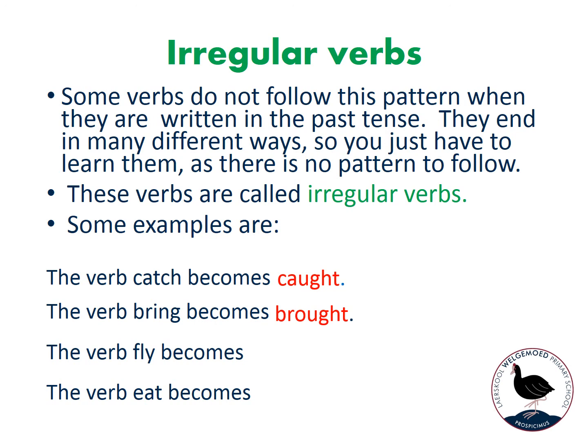The verb 'fly' — do we say 'we flied to Cape Town'? No. We say 'flew to Cape Town'. So 'fly' becomes 'flew' in the past tense, which is also quite a different word. And our last example: the verb 'eat' becomes 'ate'. It would sound very odd if we said 'I eated my chocolate'. So 'eat' becomes 'ate', and it is also an irregular verb because it doesn't follow a regular pattern.